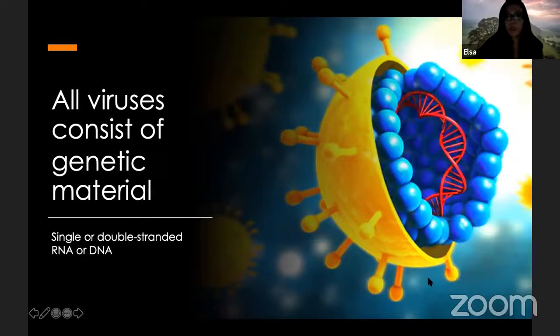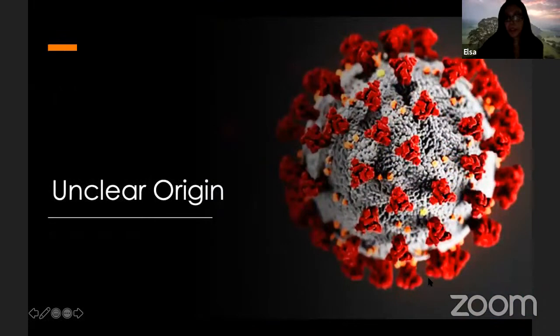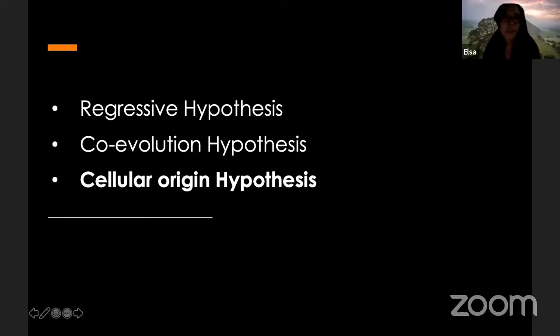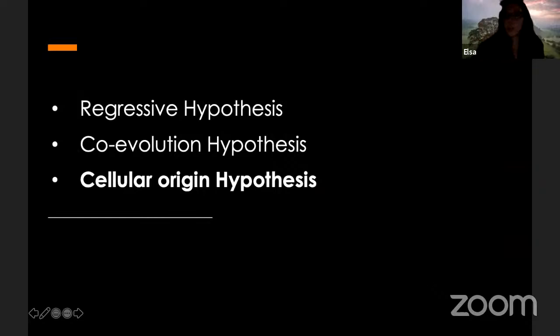There are three main hypotheses that try to address this mystery. The regressive hypothesis postulates that viruses were once self-sufficient entities that infected other organisms but were not reliant on them, until the genes they were no longer using were simply lost. The co-evolution hypothesis, also known as the virus-first hypothesis, proposes that viruses could have evolved from complex molecules of protein and nucleic acid at the same time the cell first appeared on Earth. This talk is linked to the cellular origin hypothesis, which states that some viruses may have evolved from bits of DNA or RNA that escaped from genes of larger organisms.